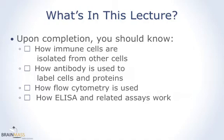Upon completing this lecture, you should understand how immune cells are isolated from other cells. You will become familiarized with antibody binding as a method to label cells and proteins. You will be introduced to the basic principles of flow cytometry. Lastly, you should understand how ELISA and related assays work.